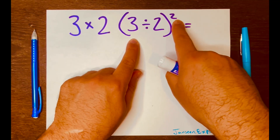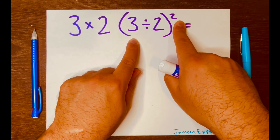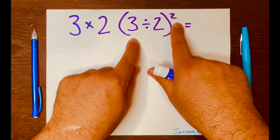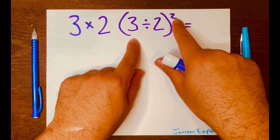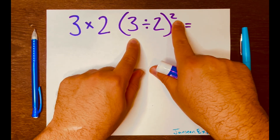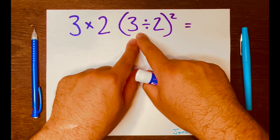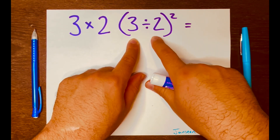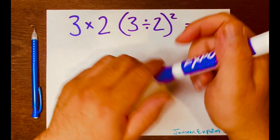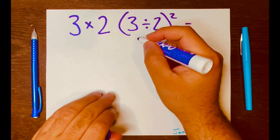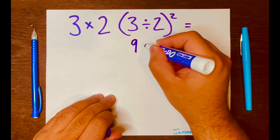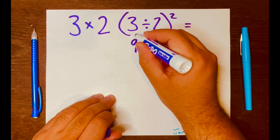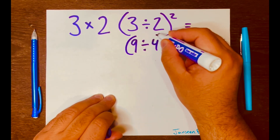Notice that we have this exponent of two — the power of two, or two squared. This is telling us to multiply three times three, which is nine, and two times two, which is four. So we write nine divided by four, and then keep the parentheses.